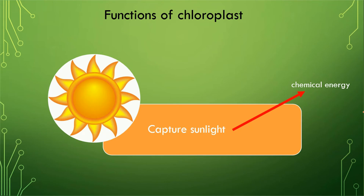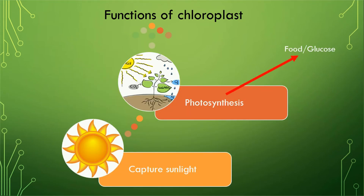The second function of chloroplast is photosynthesis — a process in which food is synthesized in the plant cells. Photosynthesis takes place only in the chloroplast; if the chloroplast is absent in a particular cell, the photosynthesis process cannot take place. This is the reason the presence of chloroplast makes plants independent, because they are not dependent on anything else for food — they can prepare their own food.